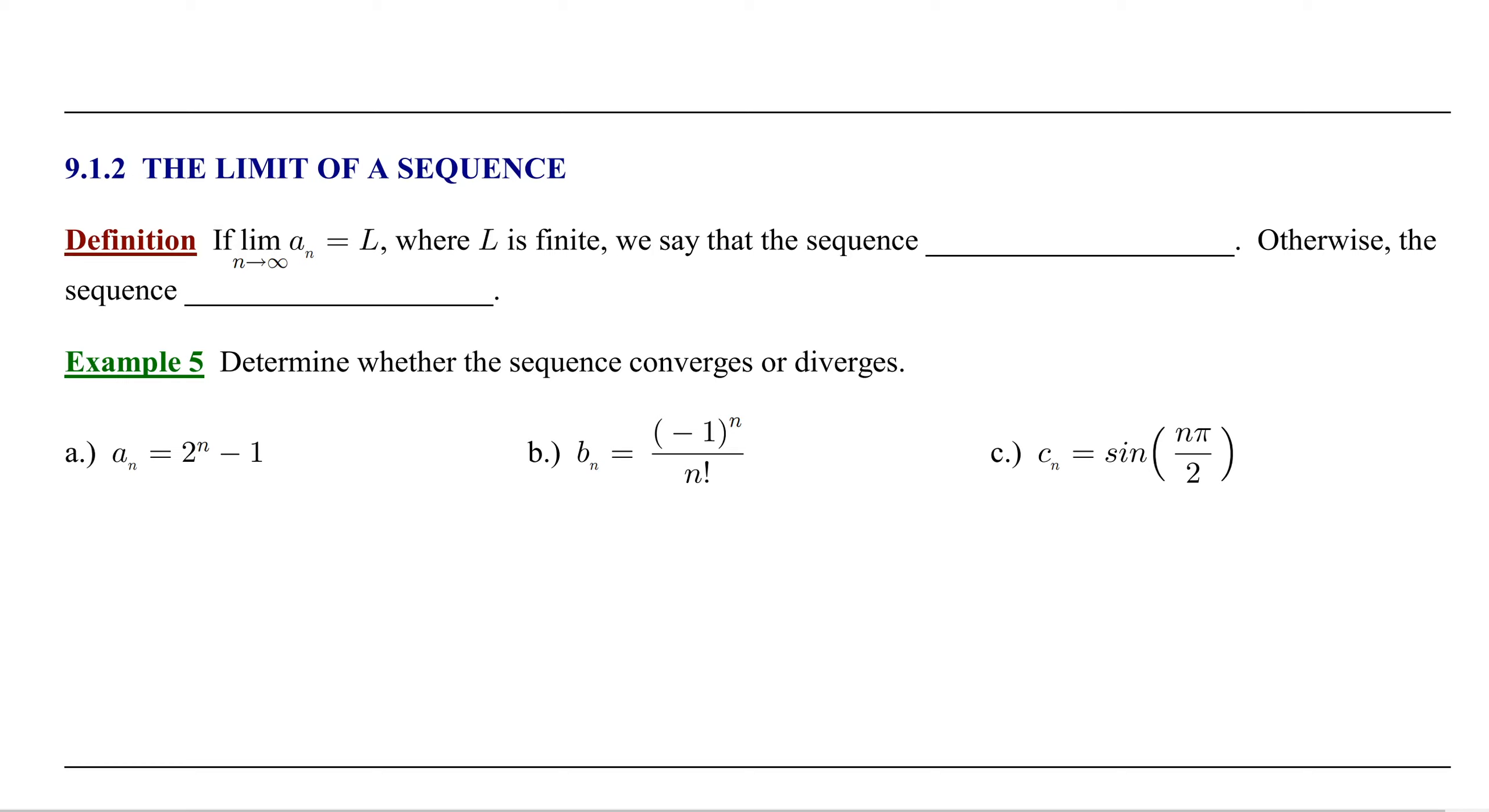In section 9.1.2, we'll learn how to find the limit of a sequence. If the limit as n approaches infinity of a sub n equals a number L, where L is finite, we say that the sequence converges. Otherwise the sequence diverges.